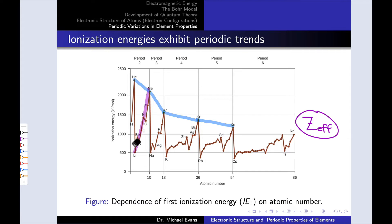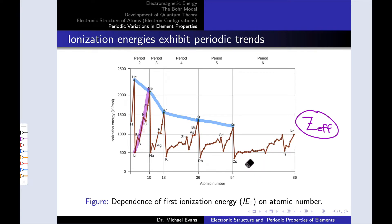There are a few ripples in the graph — for example, nitrogen versus oxygen and phosphorus versus sulfur — with interesting reasons for those exceptions that we won't get into here. I'll also make the usual caveat that the transition metals are in a league of their own, with very little change in ionization energy as we move across the transition series.